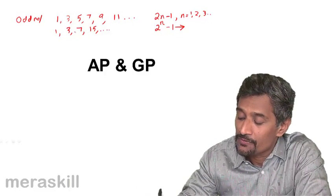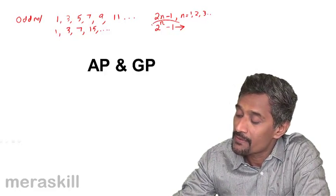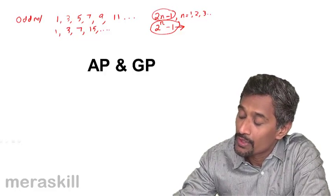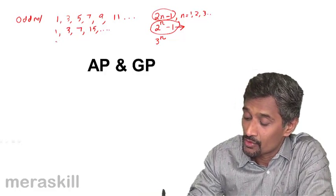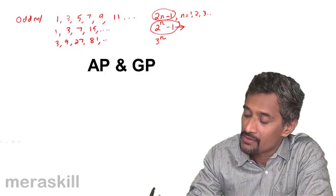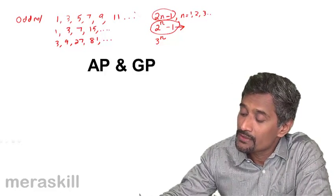So any set of numbers which are arranged in a particular order, all of which satisfy a specific condition, say 2 raised to n-1. Let's take something like 3 raised to n. So in that case, this could be 3, 9, 27, 81, and so on and so forth. So this is a sequence. So these are all sequences.